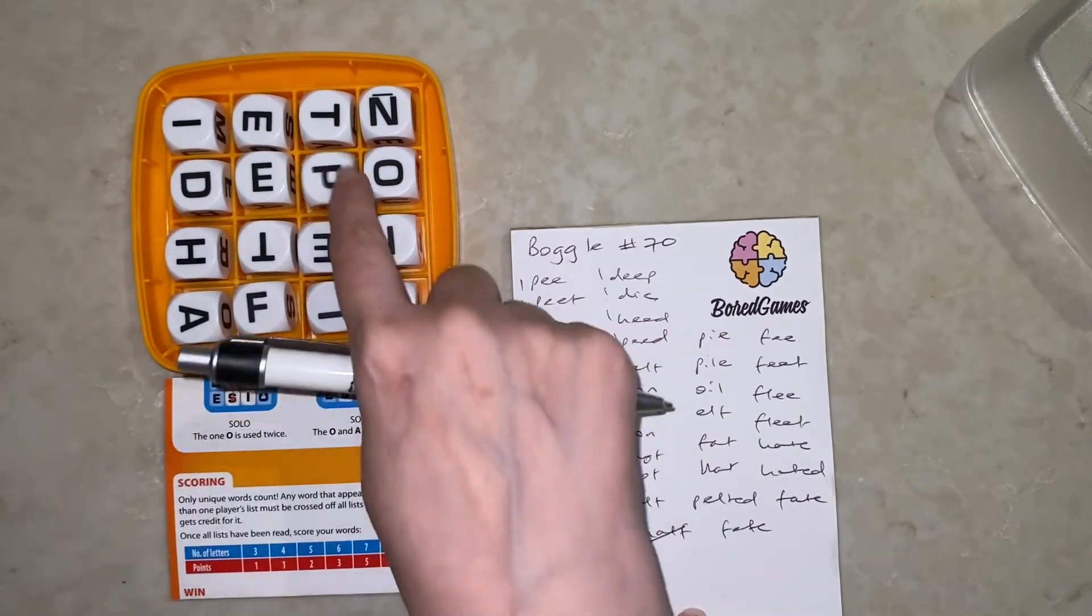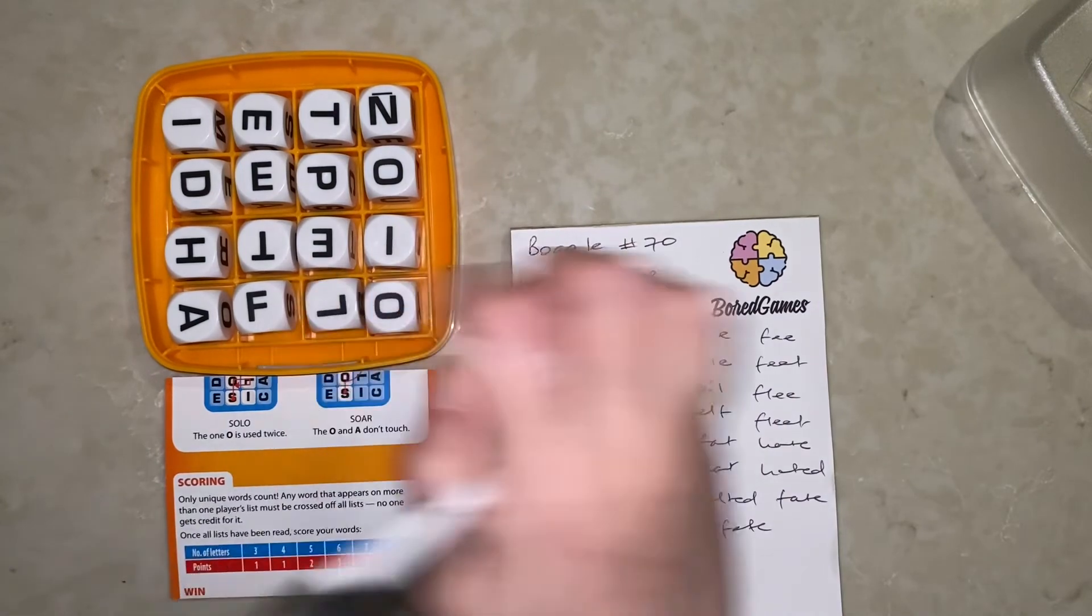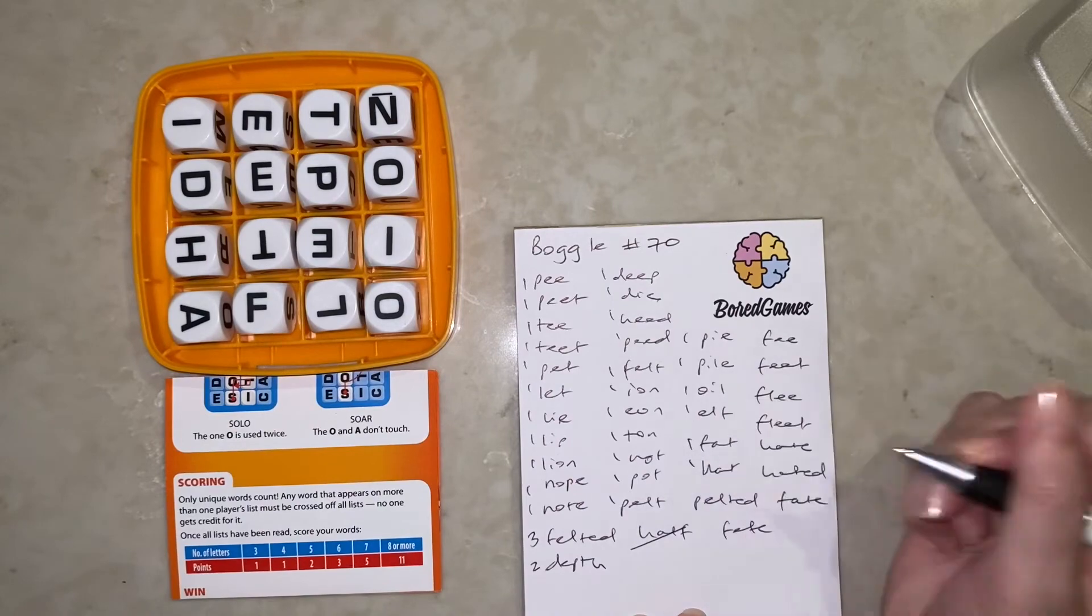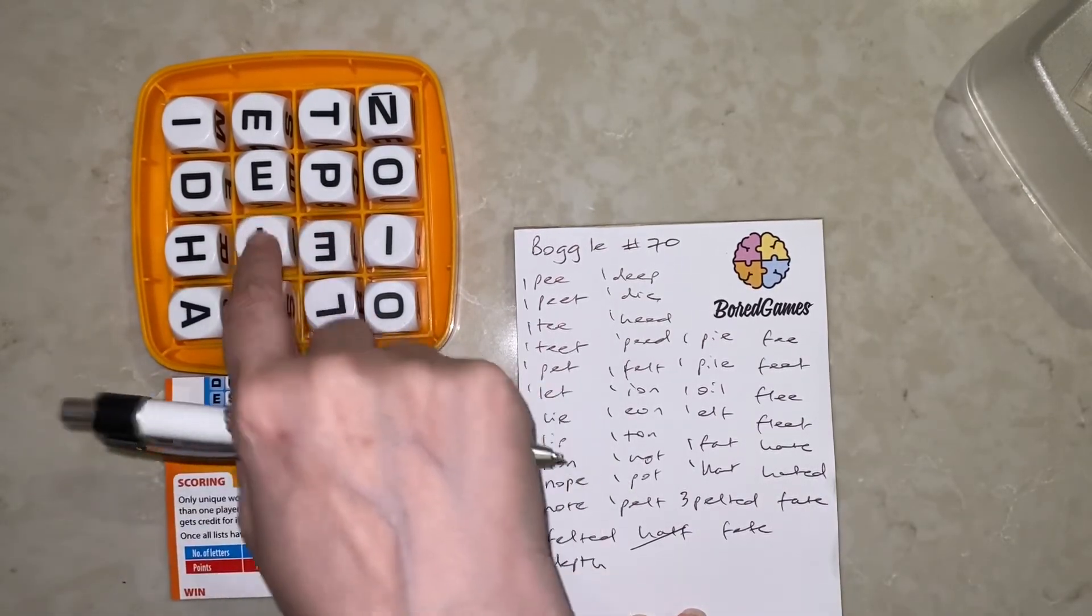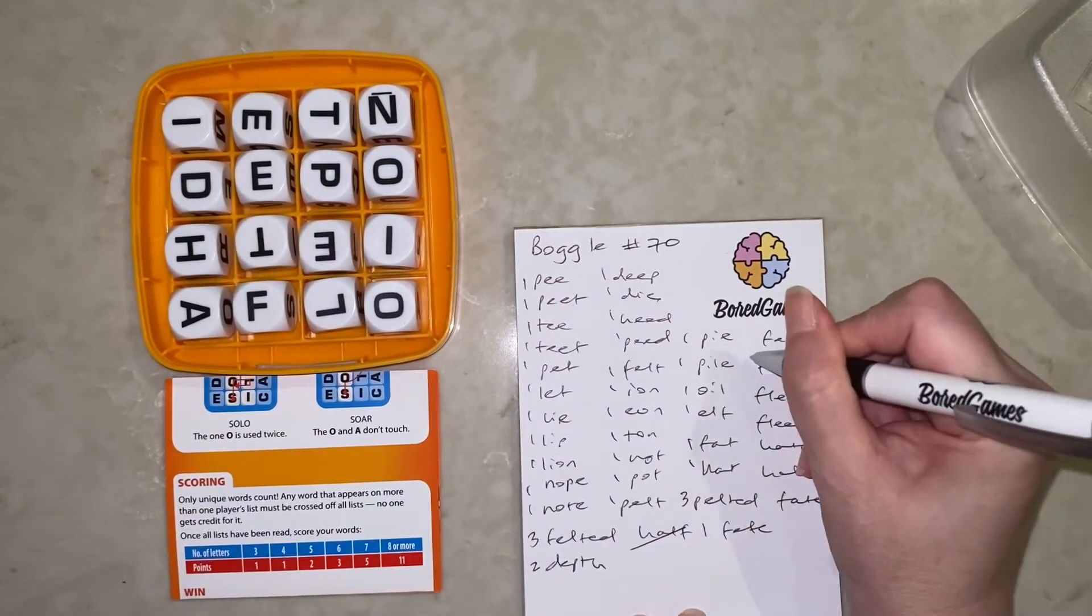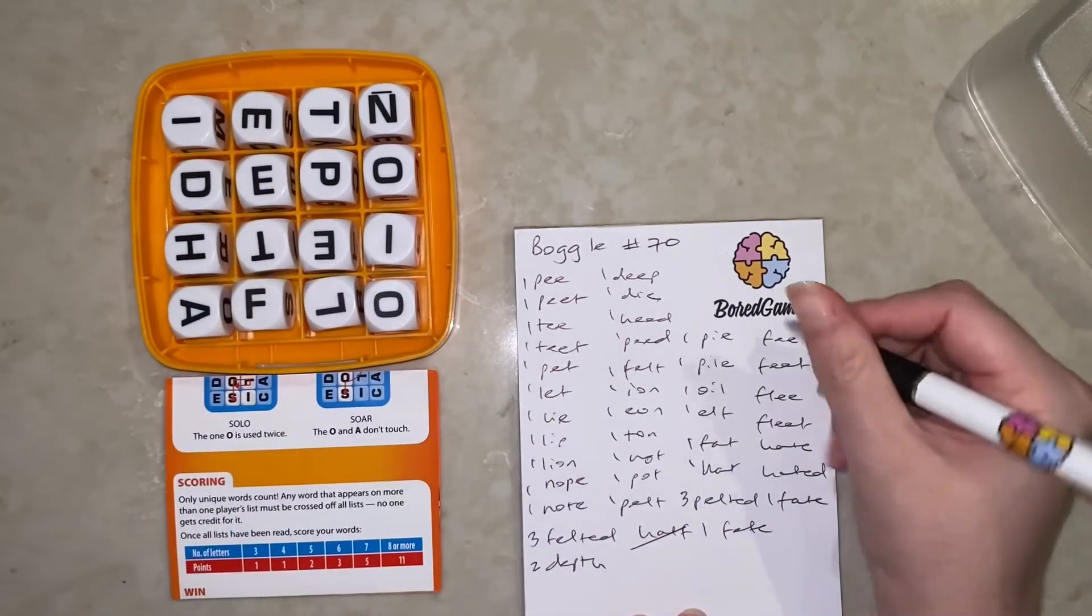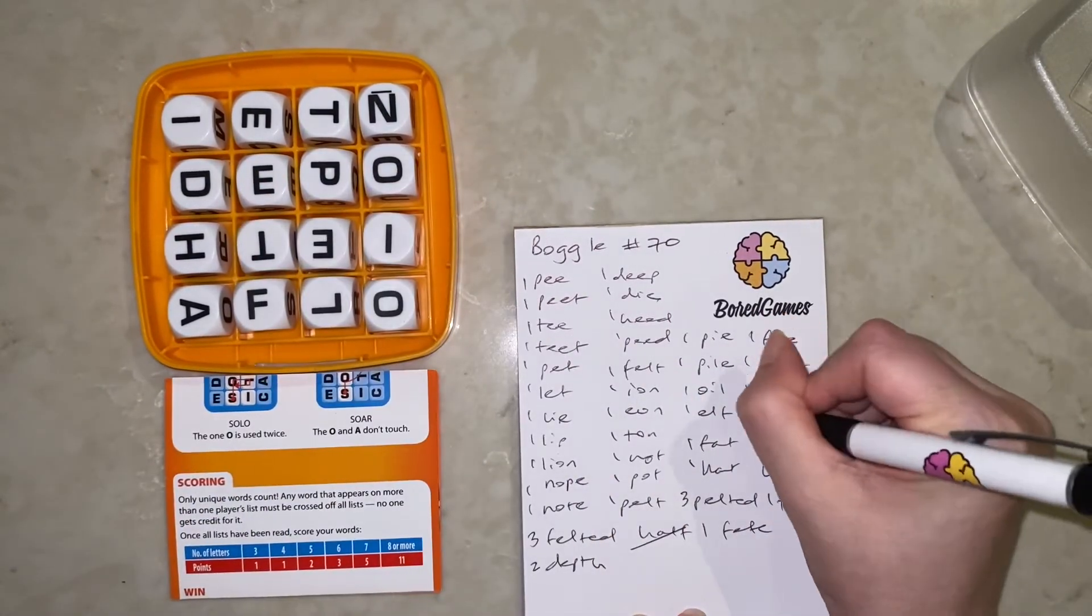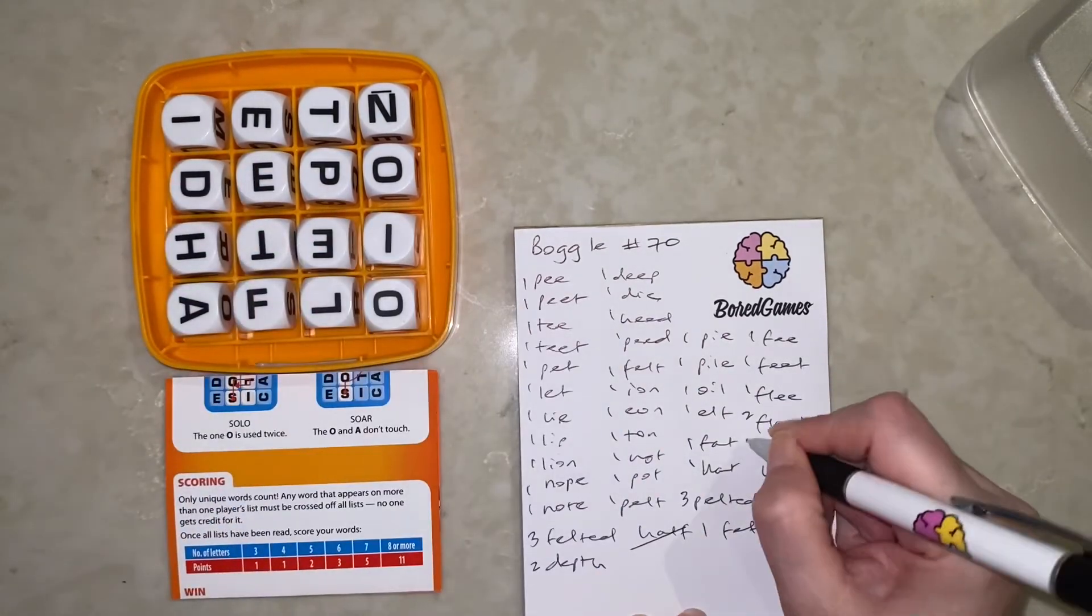Pie and pile, Oil and elf, Fat and hat, Pelted, so six is three, Fate, Fee and feet, Flea and fleet, Hate and hated. One and two.